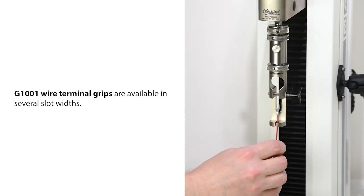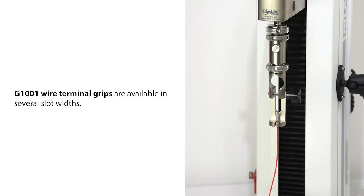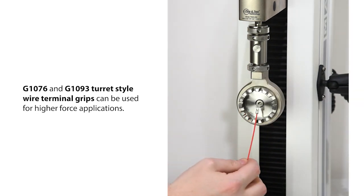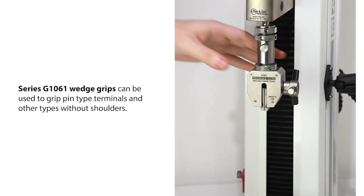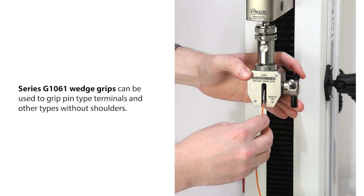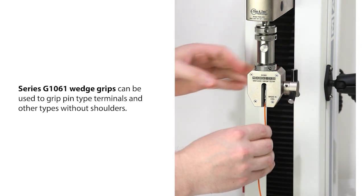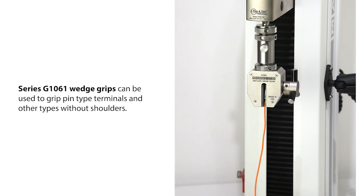G1001 wire terminal grips are available in several slot widths to accommodate different wire gauges. G1076 and G1093 turret style wire terminal grips can be used for higher force applications. Series G1061 wedge grips can be used to grip pin type terminals and other types without shoulders.